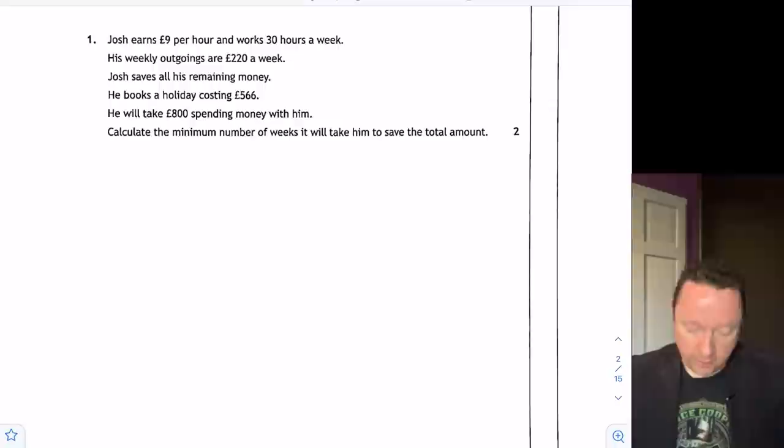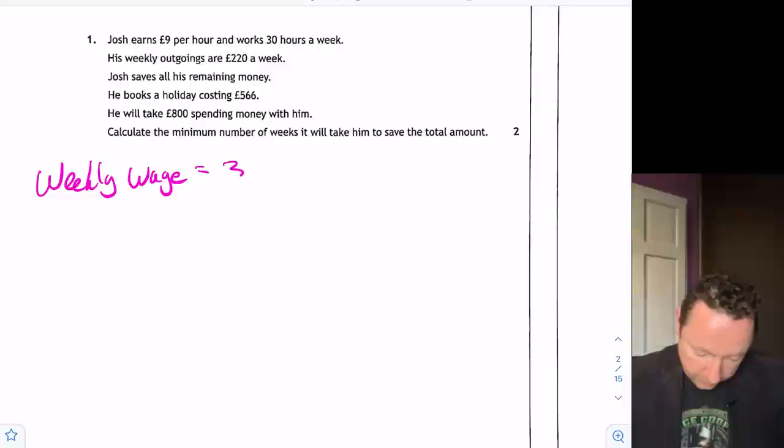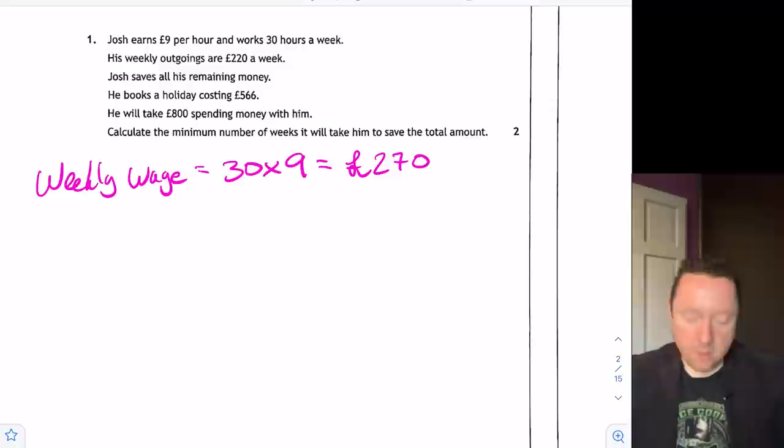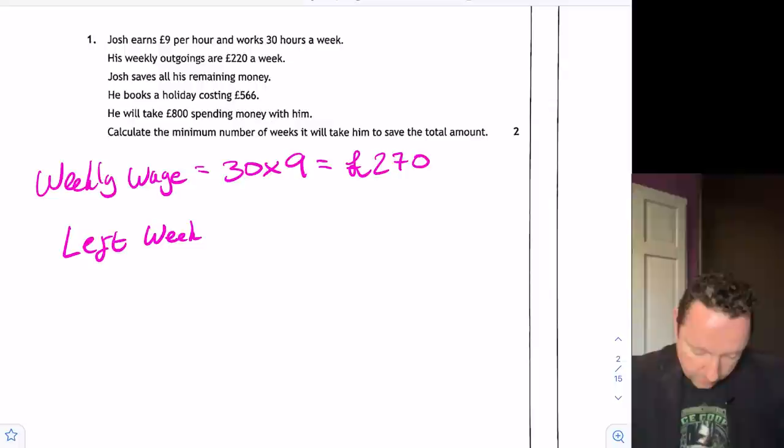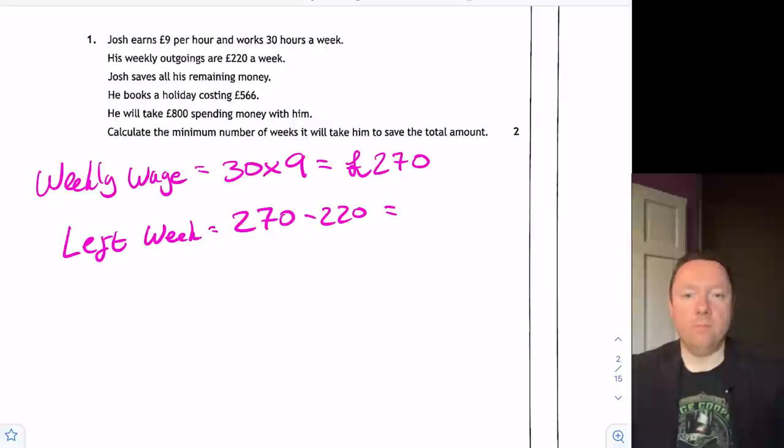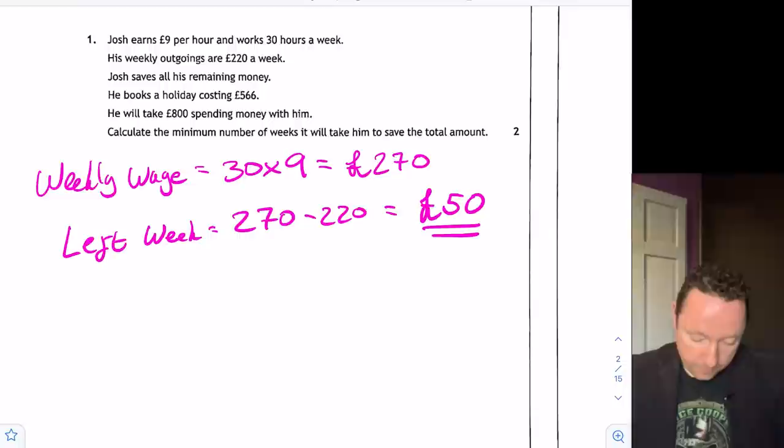Josh earns £9 per hour and works 30 hours per week. His outgoings are £220. Calculate his remaining money. He books a holiday for £566 and will take £800 spending money with him. Calculate the minimum number of weeks it will take him to save this amount. So he earns £9 per hour, 30 hours per week. So we need to work out his weekly wage. Weekly wage equals 30 times 9, which is £270.